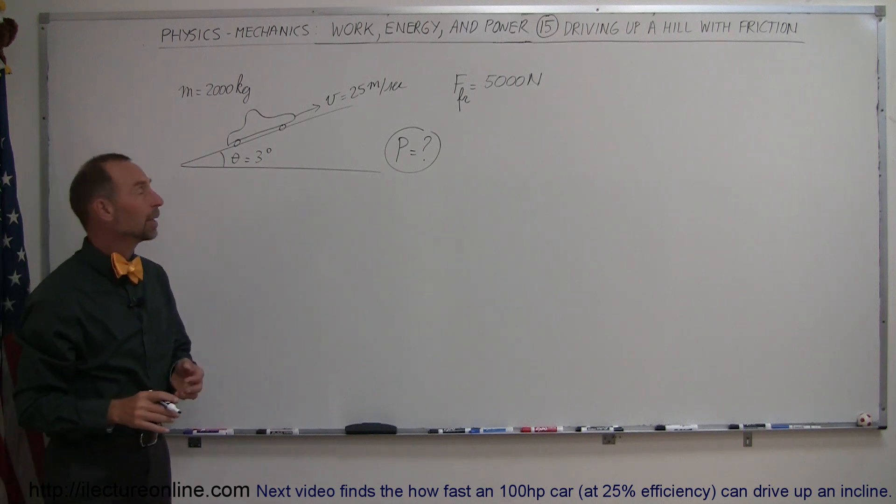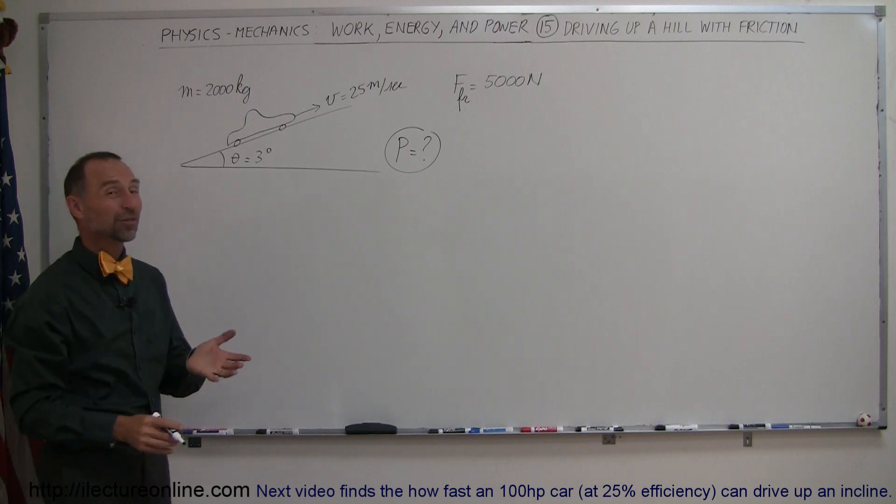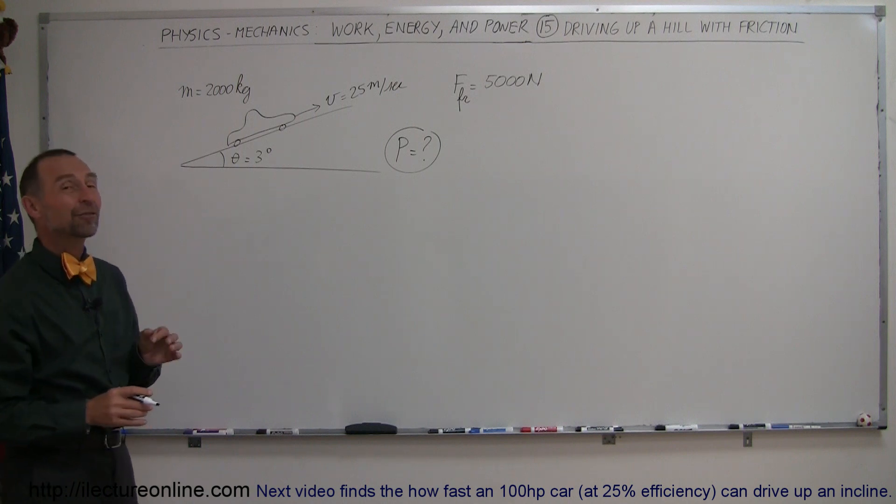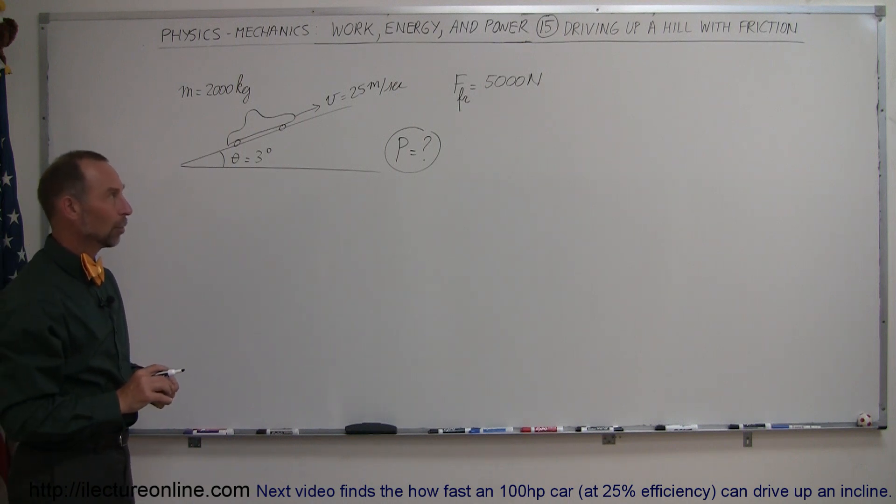Which is almost six—I mean 25 meters per second, which is almost 60 miles per hour. And if the friction is taken into account, how much power does it take now for the car to make it up that hill?